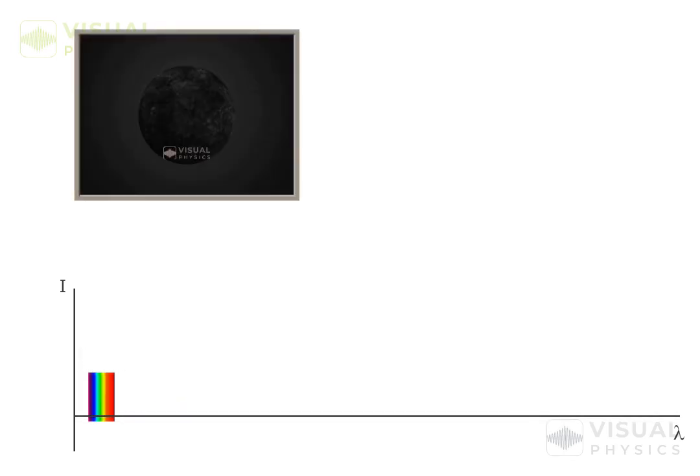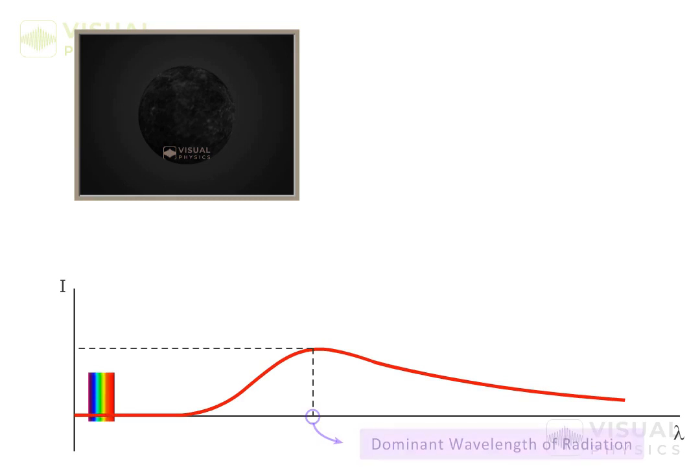For a perfectly black body, the variation of intensity with wavelength is as shown. At a particular temperature, intensity of radiation is maximum around one wavelength, which is known as the dominant wavelength of radiation. And most of the energy of radiation is carried by waves having wavelength in a particular range around the dominant wavelength. Intensity of radiation for other wavelengths is very small, though it is not zero.